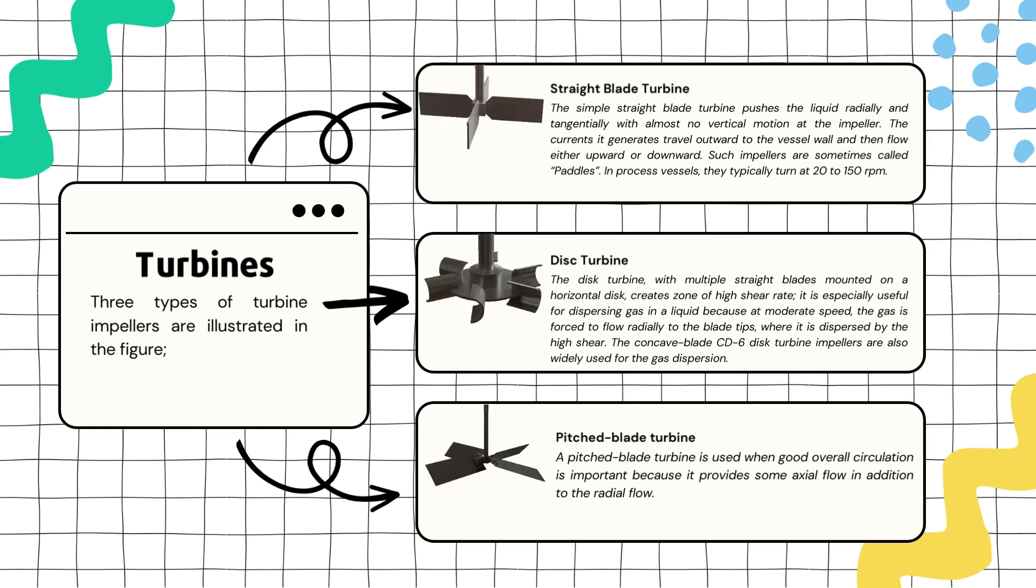The high shear force helps disperse the gas into tiny bubbles for efficient mixing. After disc turbine comes the concave blade CD6 disc turbine. Similar to the disc turbine, the CD6 version has blades mounted on a horizontal disc. It's also commonly used for dispersing gas in a liquid.